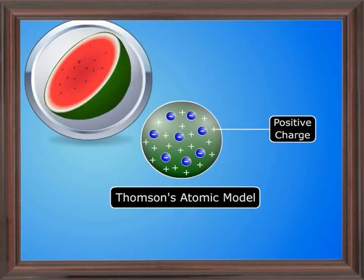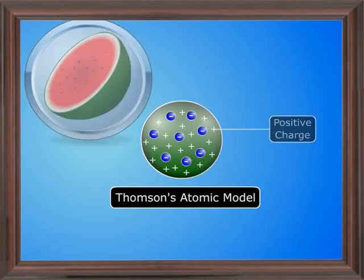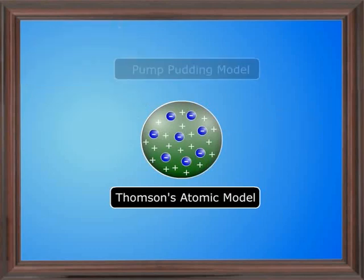This makes the atom electrically neutral. This model is also known as the Plum Pudding model.